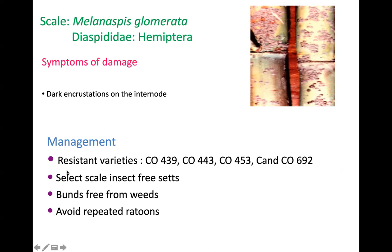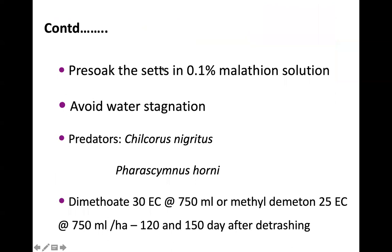To prevent this, use resistant varieties — recommended varieties include Co 439, 443, 453, and 692. Select scale-insect-free setts for planting. Keep the field free from weeds, which serve as alternate hosts in the off season. Avoid repeated ratoons. Pre-soak setts in 0.1 percent Malathion solution. Avoid water stagnation. Predators Chilocorus nigratus and Pharoscymnus horni are effective. Dimethoate is also effective to control this pest.